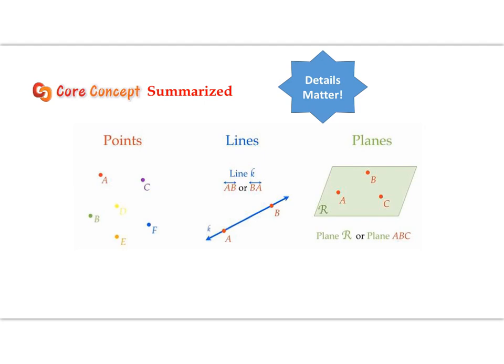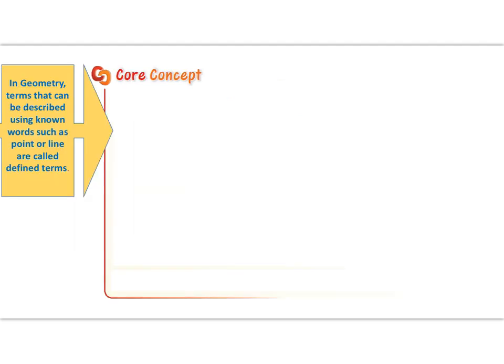Here's a summary of all three undefined terms: points, lines, and planes. Details matter — how you name points, which symbols you use, and how many letters you include are all super important. Take note of how to name, identify, and draw these three undefined terms. In geometry, terms that can be described using known words such as 'point' or 'line' are called defined terms. Let's go through the defined terms for geometry.